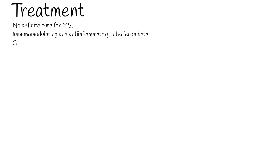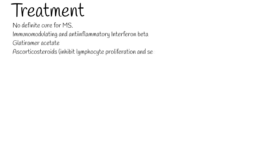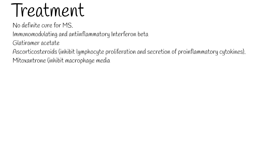Currently there is no definitive cure for multiple sclerosis. However, immunomodulating and anti-inflammatory agents can diminish its progression and decrease some pathological symptoms. Immunomodulating agents including interferon-beta and glatiramer acetate are used in non-symptomatic phases. Other agents are also used.